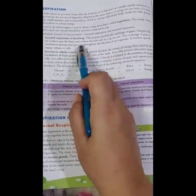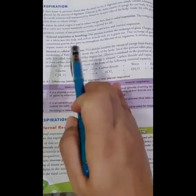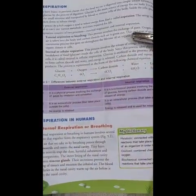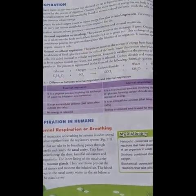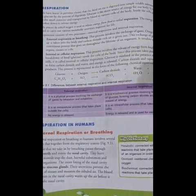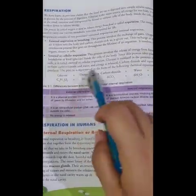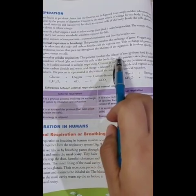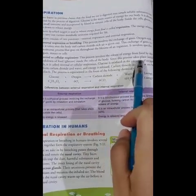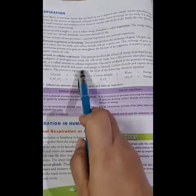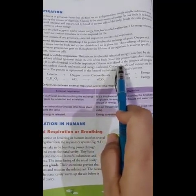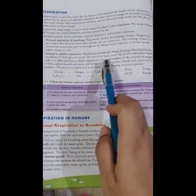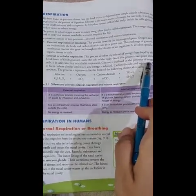In external respiration, oxygen-rich air comes into the body and carbon dioxide-rich air is given out. When oxygen comes into our body, it helps in the breakdown of food — that is glucose — and releases energy. This process takes place inside the cell, so it is known as internal or cellular respiration. Glucose is oxidized in the presence of oxygen to release carbon dioxide, water, and energy.